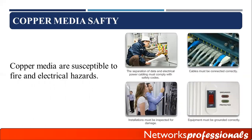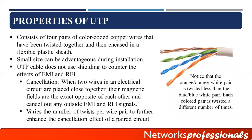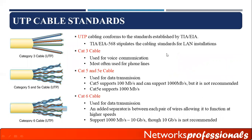Copper media is susceptible to fire and electric hazards, so be careful. UTP cable consists of four pairs of color-coded copper wires twisted together and encased in a flexible plastic sheath. There are four pairs: white-orange and orange, white-green and blue, white-green and pure green, and white-brown and brown. When using UTP cable, there are many different standards available in the market.